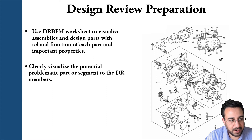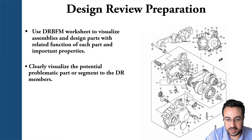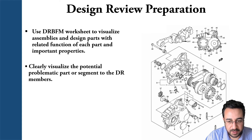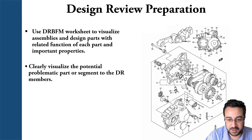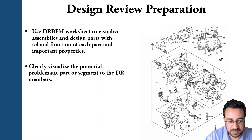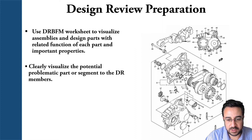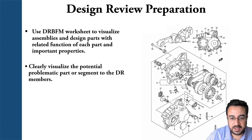You use the worksheet to visualize assemblies and design parts with the related functions of each part and their important properties. Then you clearly visualize the potential problematic parts, segments, or assemblies — including sub-parts — and show all their neighboring systems and assemblies, so that during your design review meeting you can clearly show all potential problems to the review members.